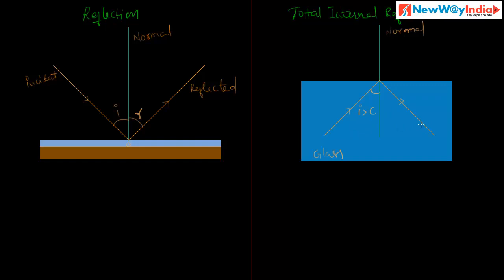This is called total internal reflection. Here, no smooth surface is needed. The angle of incidence must be greater than the critical angle, and the ray must travel from the denser medium to the rarer medium. In case of regular reflection, some rays are absorbed by the reflecting material, but in case of total internal reflection, no rays are absorbed.